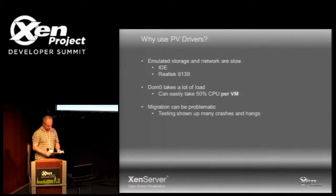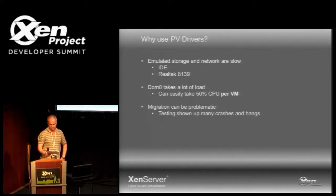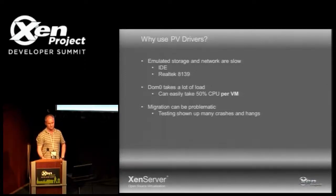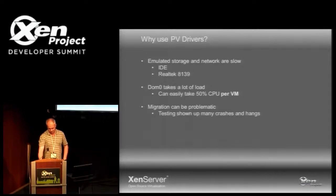So why should you use PV drivers? HVM guests get emulated hardware. On XenServer today, that means you get up to three IDE disks because we need the fourth IDE slot for the CD-ROM, and up to eight Realtek network devices — 100 megabit, pretty ancient. We use Realtek because that's the only inbox network driver Windows XP has and we still have to support it. Emulation is done by trapping IO port accesses or MMIO page faults — it's very slow.